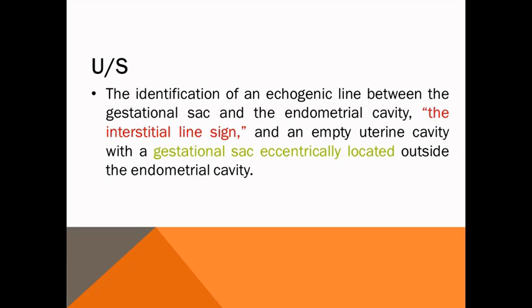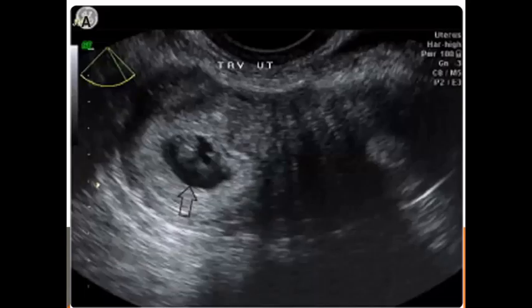Diagnosis is difficult by ultrasonography. We should show an echogenic line between the gestational sac and the endometrial cavity. The sac is outside the endometrial cavity in the lateral aspect — this is called the interstitial line sign — with an empty uterine cavity. We notice the gestational sac is centrally located outside the endometrial cavity. This is the endometrial cavity and this is the sac.